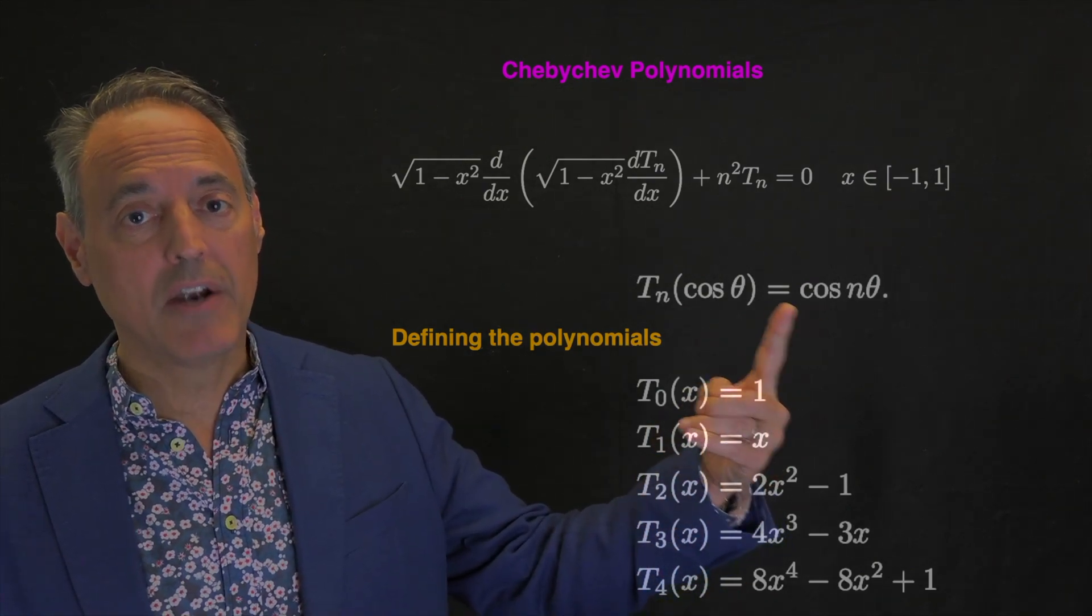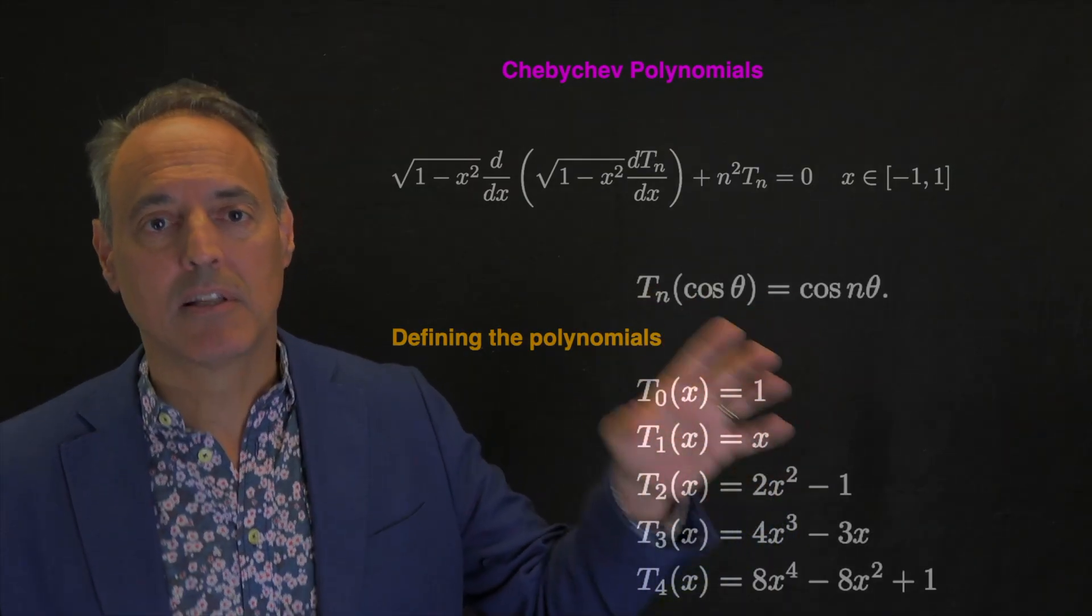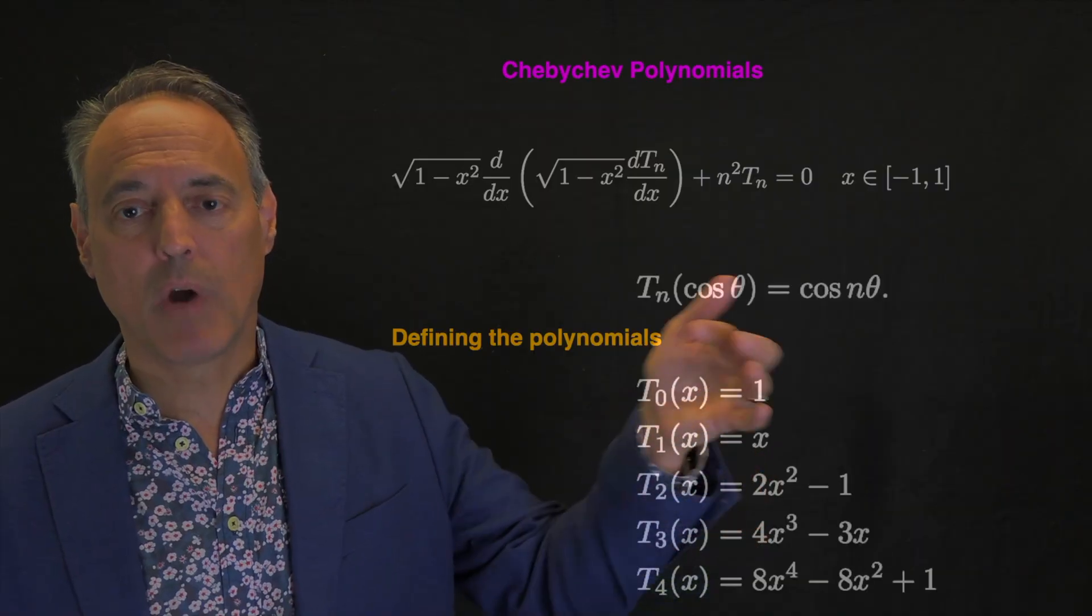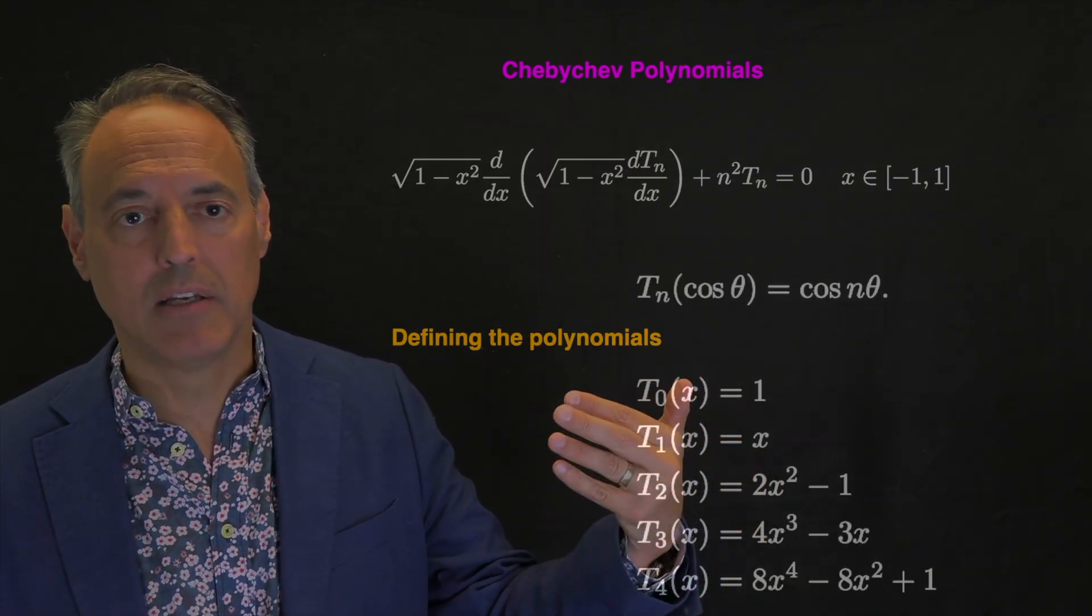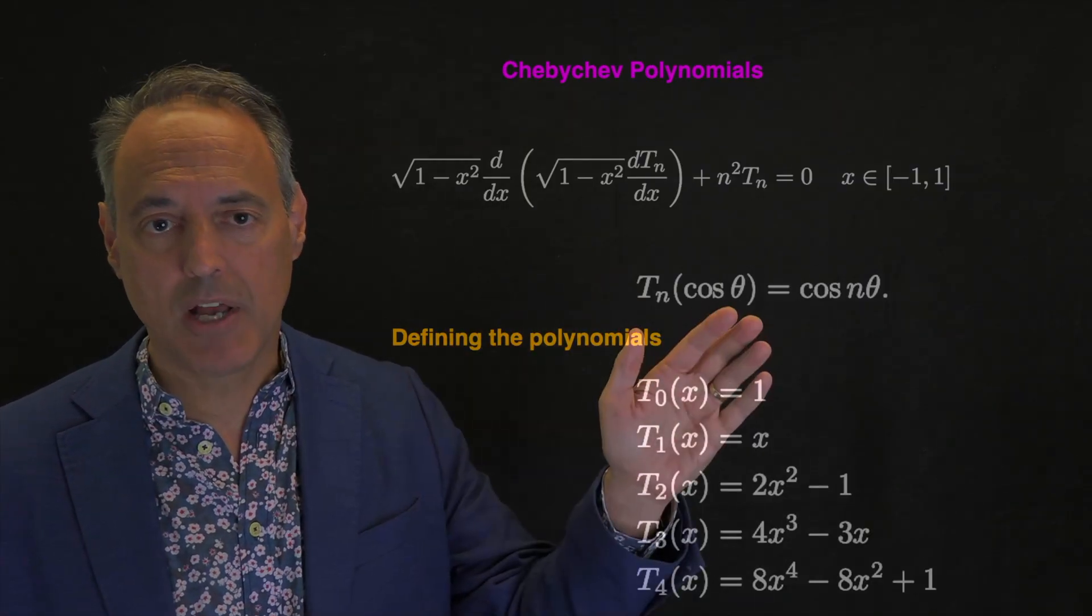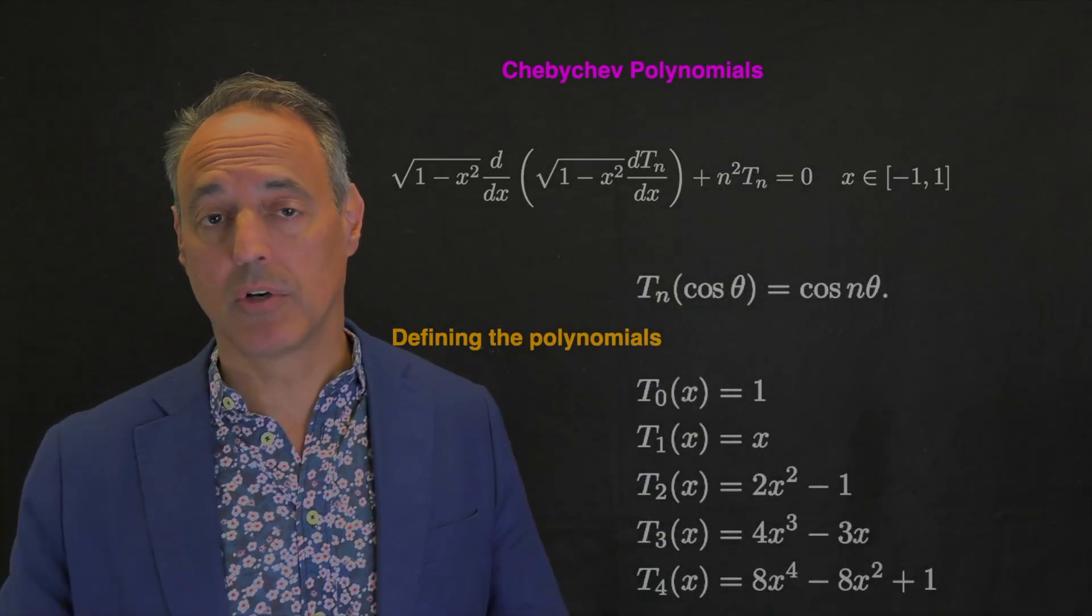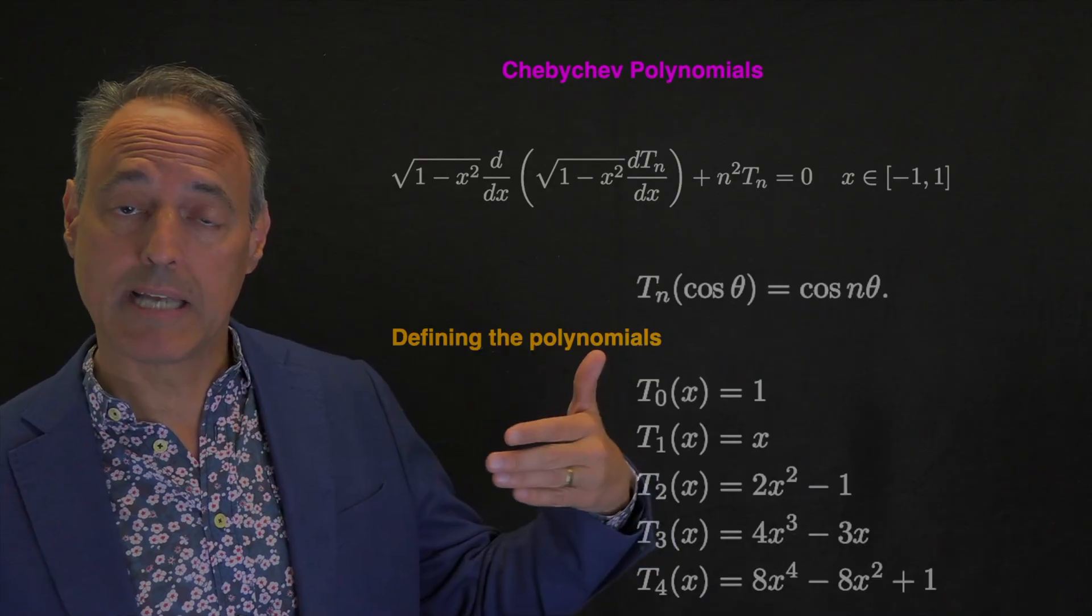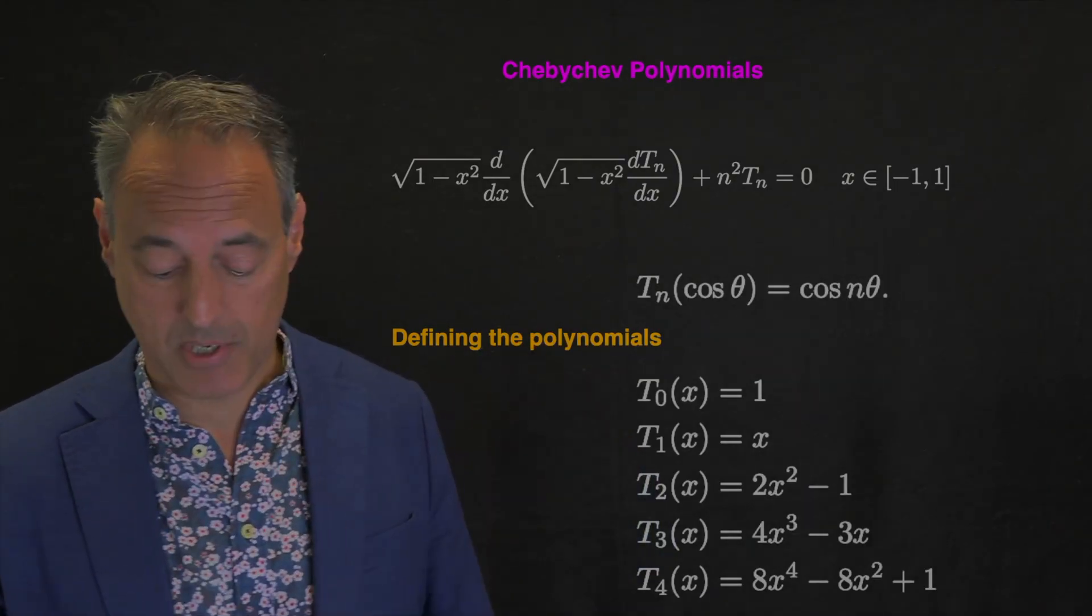Notice there's cosine of n theta, and cosine n theta is the basis function used in the discrete cosine transform. Right away you see the connection: x equals cosine theta connects the Chebyshev coordinate system and the Fourier discrete cosine transform. We can do the discrete cosine transform in n log n time, and this is how we connect the two together.